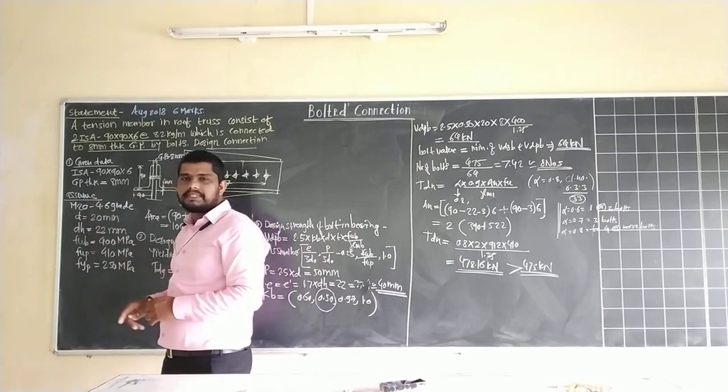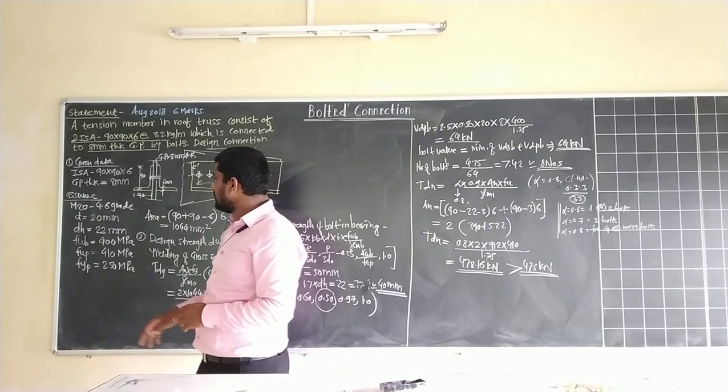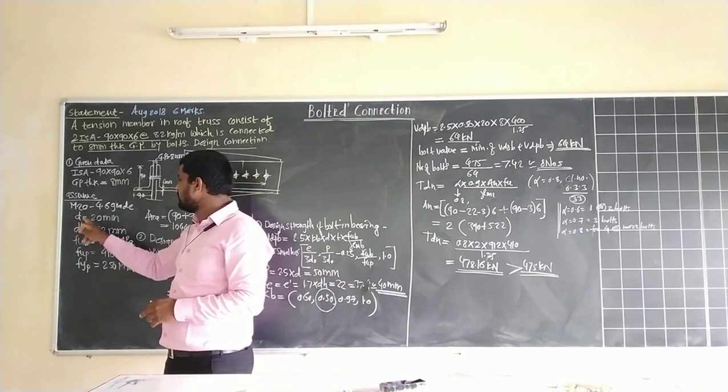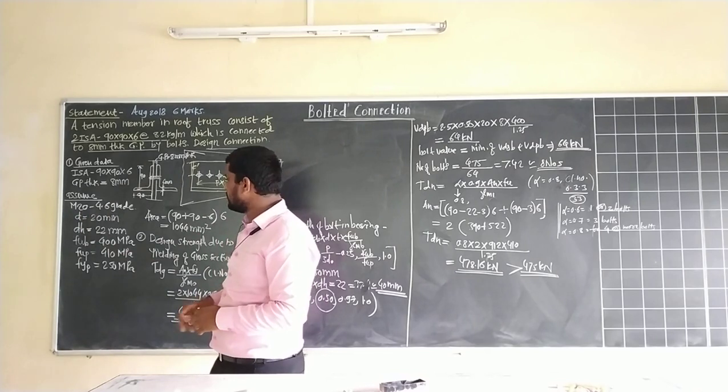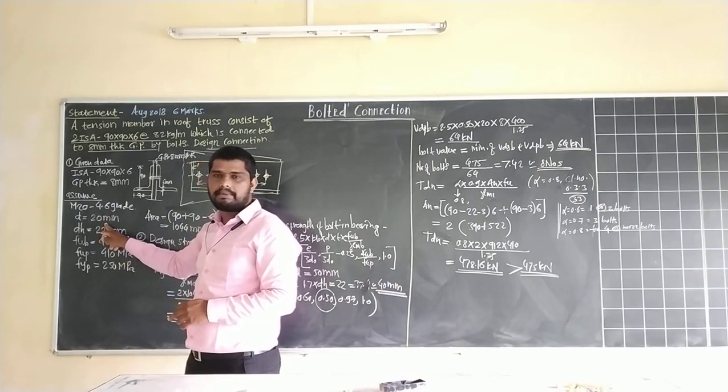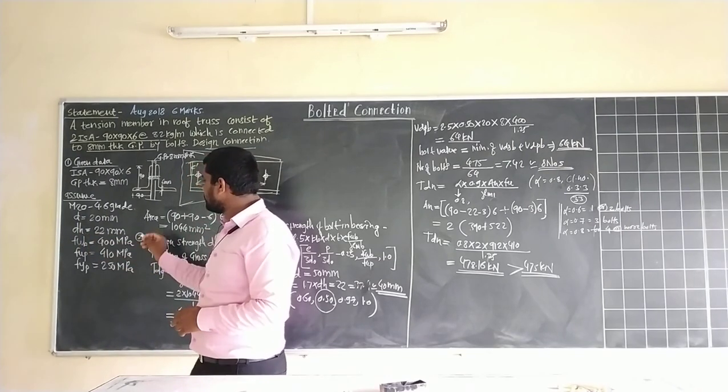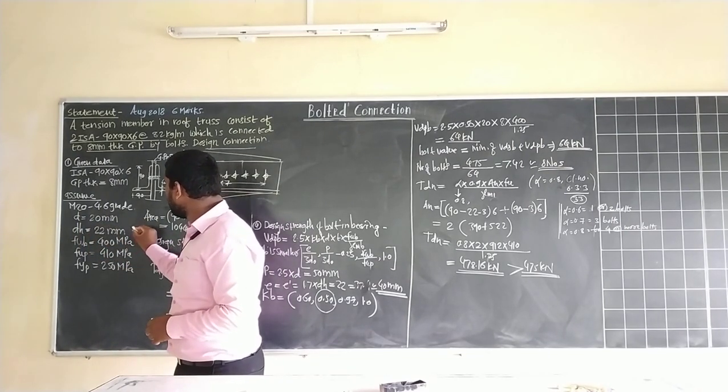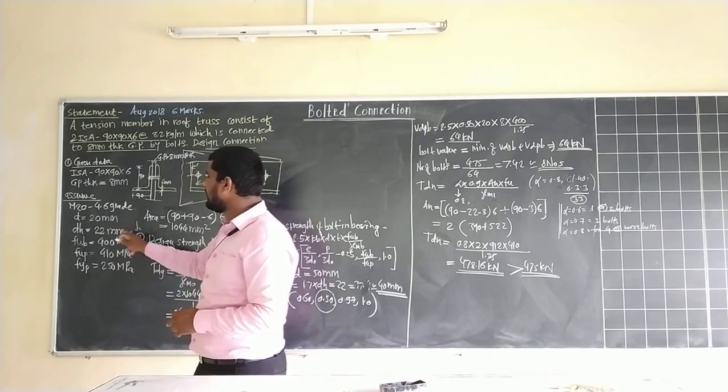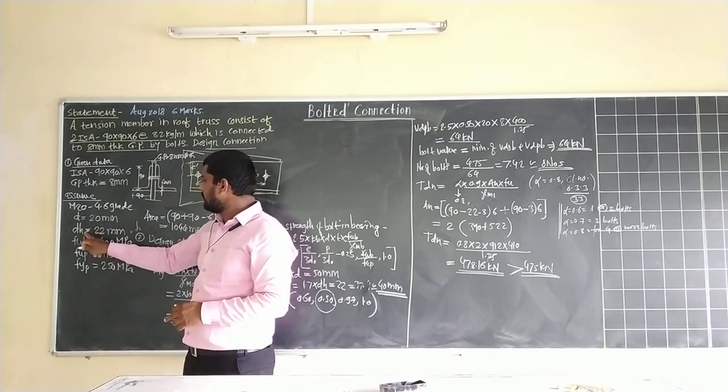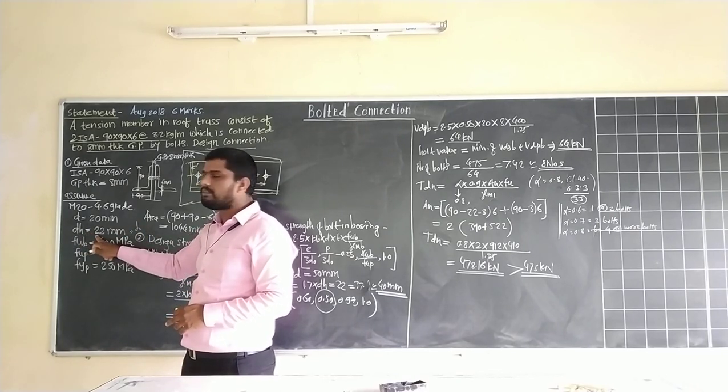Some assumptions are required to solve this numerical. First assumption: assume M20 grade 4.6 bolt. Diameter of bolt we assume 20 mm, that is D naught. Diameter of hole D_H or D_0 is 22 mm.